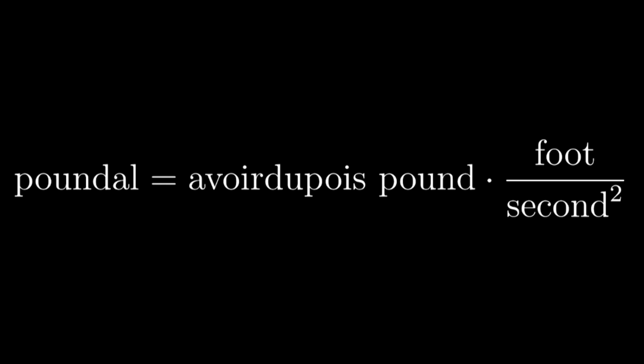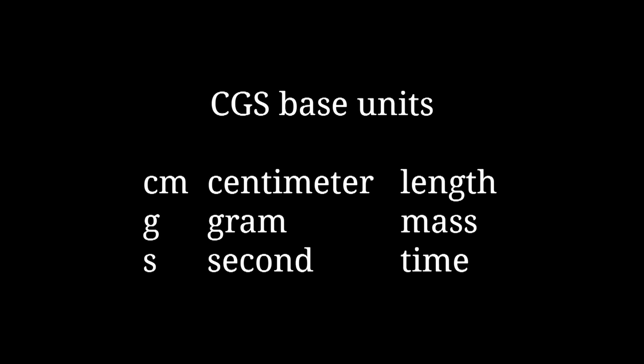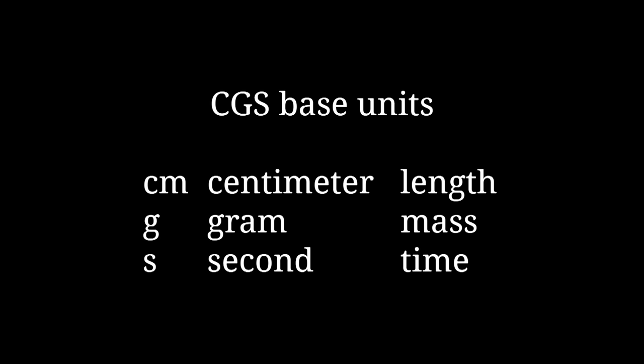Right, so you can measure force in poundals, equal to pound feet per second squared. There's even other coherent metric systems, like CGS (centimeter gram second) units, where force is measured in dynes, gram centimeters per second squared. All of these units—the newton, poundal, and dyne—are all defined the same way, just with different base units.